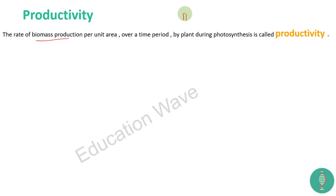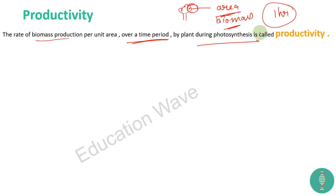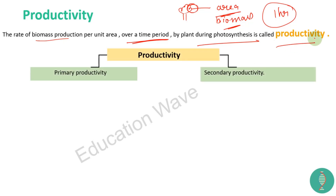For example, agar yeh jo tree hai, iske particular area mein kitni productivity hai - to particular area mein hamara kitna biomass production hua hai over a time period. Maan lijiye hamne time liya one hour, to us particular area mein kitna biomass ka production hua hai by plant during photosynthesis - us photosynthesis ke time pe kitna production hua hai in a particular area over a time period - that is known as productivity. So it is of two types: primary productivity and secondary productivity.